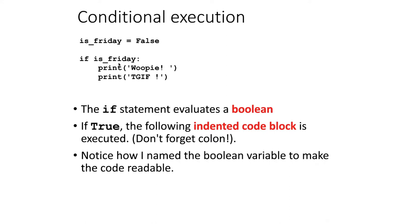In this example, we have a variable which we have named is_friday. We set the value of that variable equal to false. Then if the value of that variable is true, the indented code block which follows the colon is executed — all of the lines that have the same indentation level are executed. Since we've set the value of is_friday equal to false, the if statement will evaluate as false and that block will not be executed.